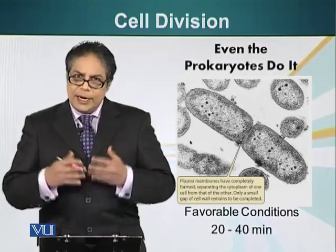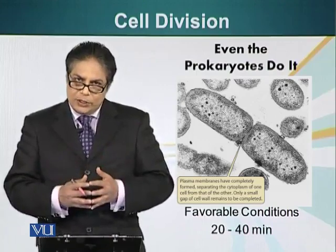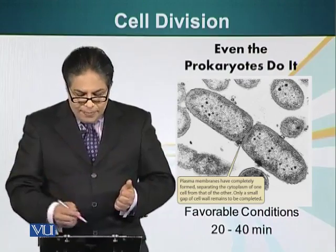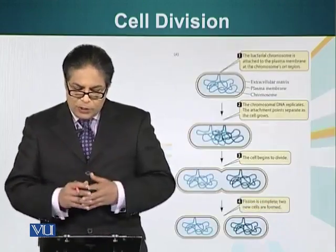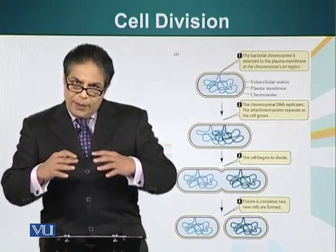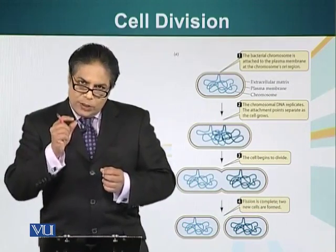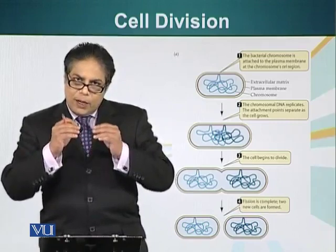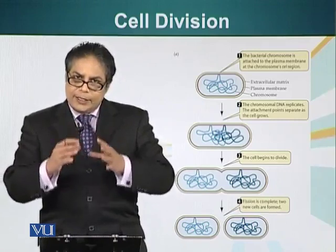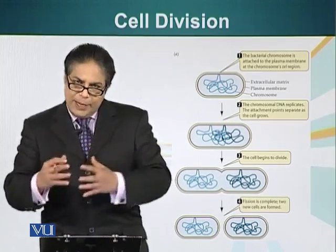Bacterial cells can divide as long as they have favorable environmental conditions — so as long as you provide bacteria with food, they will keep on dividing. A special part of the membrane attaches to the bacterial DNA, where a special sequence of DNA called the origin sequence is located. That is where DNA replication starts.